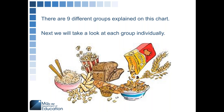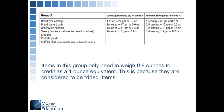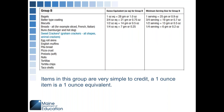The first group listed is Group A. These are things like breadsticks, crackers, and savory items that are fairly dried out. Items in this group only require 0.8 ounces to credit as a one ounce equivalent. This is because they are considered dried items — there's not as much moisture so they're not going to weigh as much.